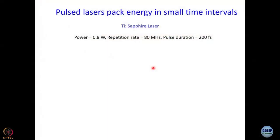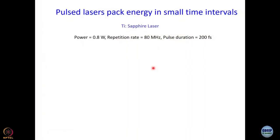For our Ti:Sapphire Tsunami laser in our lab: power is 0.8 W, repetition rate is 80 MHz, pulse duration is 200 femtoseconds — and when I say pulse duration 200 fs I mean zero-to-zero, not full-width at half-maximum. Can you calculate the energy per pulse? Power is 0.8 W, meaning 0.8 joules per second. How many pulses per second? 80 × 10⁶ pulses per second.